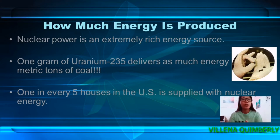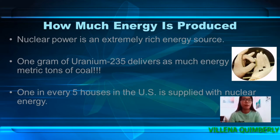The equivalent of 1 kilogram of uranium is approximately equivalent to 126 gallons of oil, 1 ton of coal, or 17,000 cubic feet of natural gas.